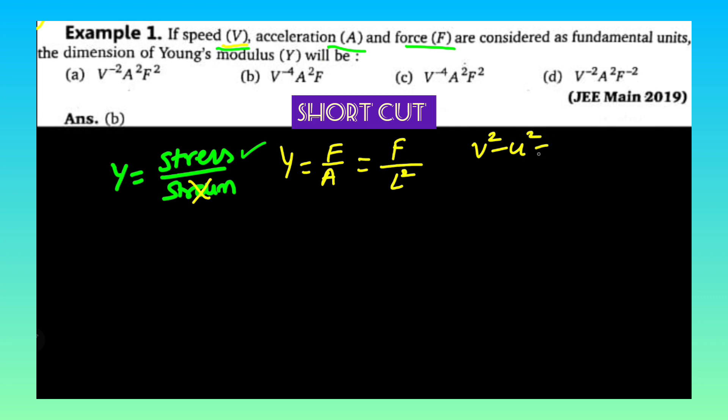S means displacement you can take it as L. If initial velocity is 0, then you can take u square is 0. Therefore we can write 2 does not have any dimensions, so we can write L is equal to v square by a.